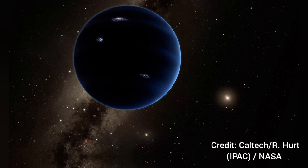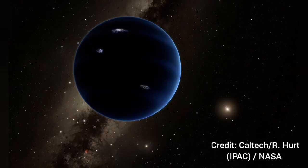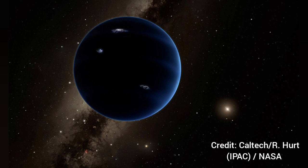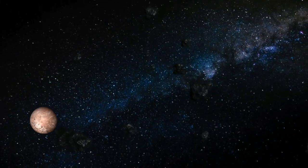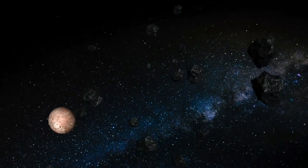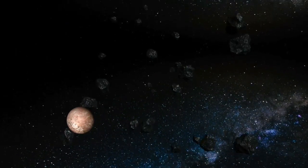Discovery of Planet 9. In 2016, Mike Brown and Konstantin Batygin from the California Institute of Technology, Caltech, posited the existence of a planet with a mass between five and six times that of Earth. The idea being that this planet was pulling not only Sedna but five other objects, all tilted at the same angle and in the same direction.